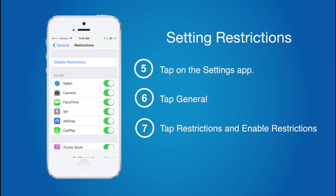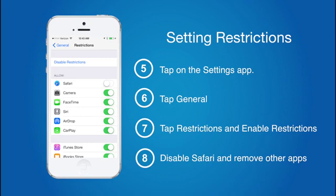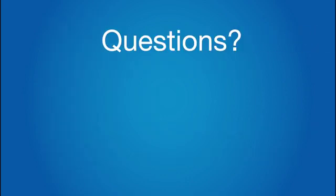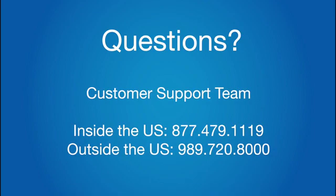Next, turn off Safari and remove other apps that have access to the Internet. And to prevent the installation of other apps, we recommend disabling installing apps along with deleting apps. Thank you for taking the time to learn how to install and set restrictions on your iOS device. Still have questions or concerns? Please call our customer support team.